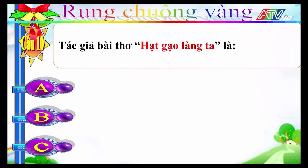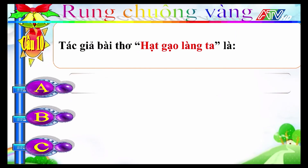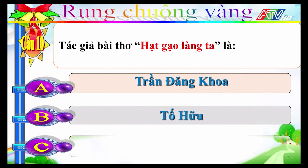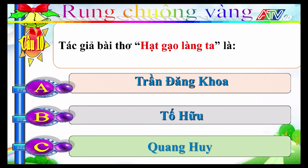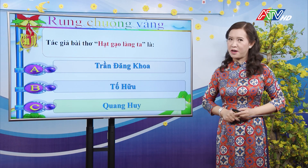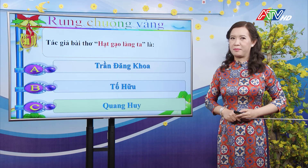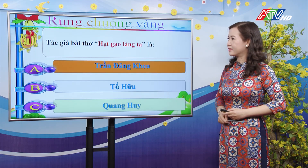Câu 10: Tác giả bài thơ "Hạt gạo làng ta" là: A-Trần Đăng Khoa; B-Tố Hữu; C-Quang Huy. Đáp án đúng là A: tác giả là nhà thơ Trần Đăng Khoa.